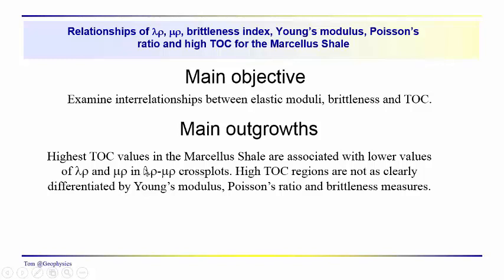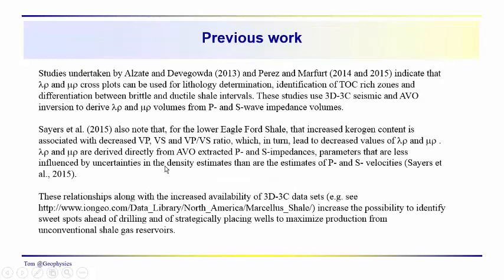Lambda-rho and mu-rho are obtained from 3D3C or 3D pre-stack inversions and AVO inversions — that would be a topic for another video — but these are the parameters that come out of those inversions.